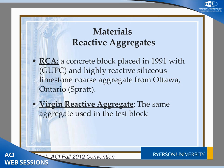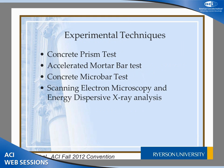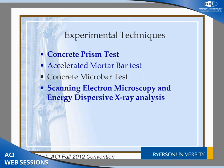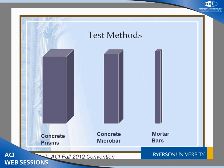Basically, what we did was a comparison between RCA coming from a test block containing an aggregate called SPRAT from Ottawa, Ontario, and the virgin SPRAT aggregate itself. So we are comparing the expansion and performance of concrete made with virgin SPRAT and recycled aggregate containing SPRAT, using different types of cement, different supplementary cementing materials, and different methodologies.